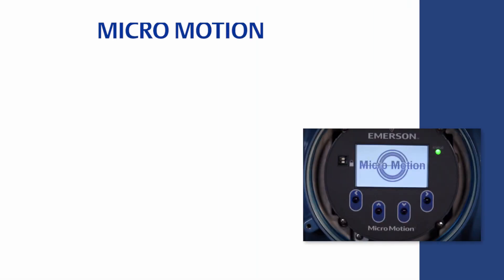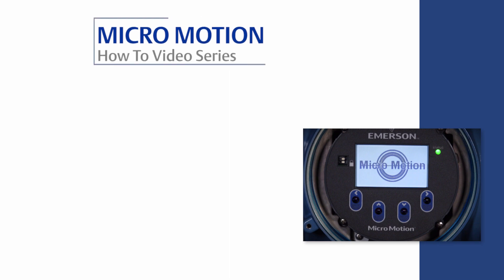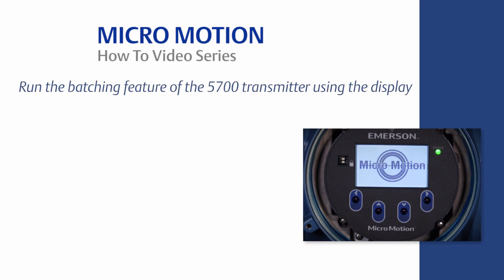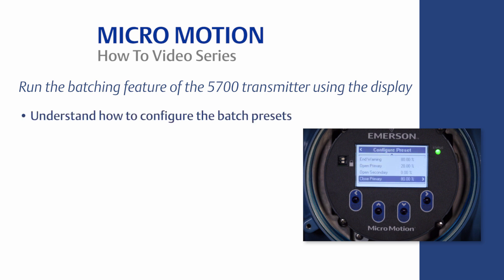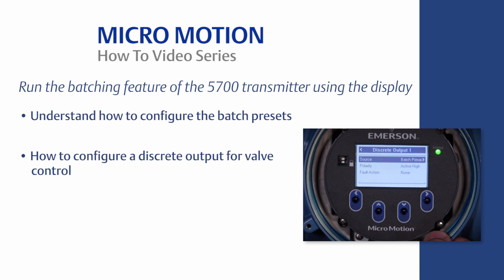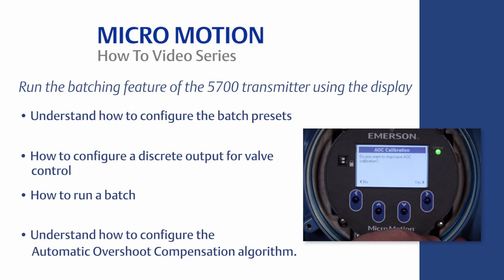Welcome to the MicroMotion How-To video series. In this video, we will cover how to run the batching feature of the 5700 transmitter using the display. The learning objectives for this video are: understand how to configure the batch presets, how to configure a discrete output for valve control, how to run a batch, and understand how to configure the automatic overshoot compensation algorithm.